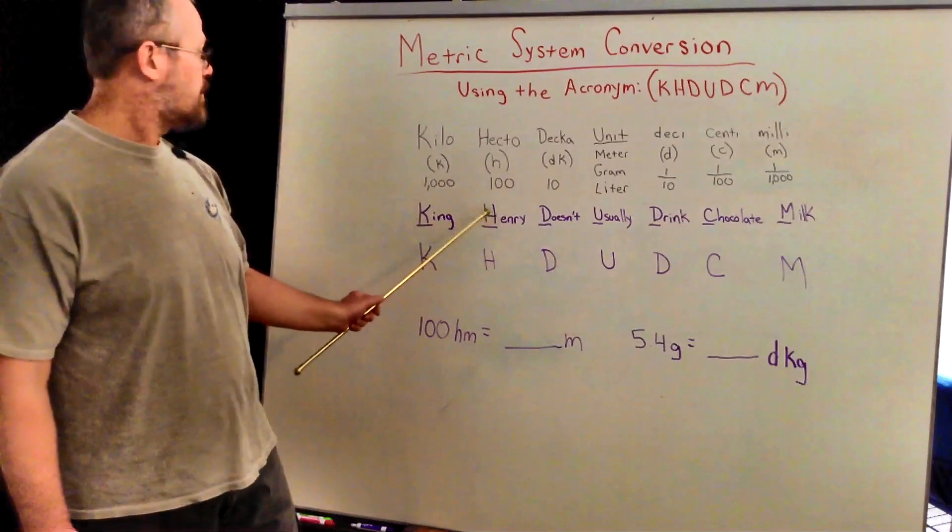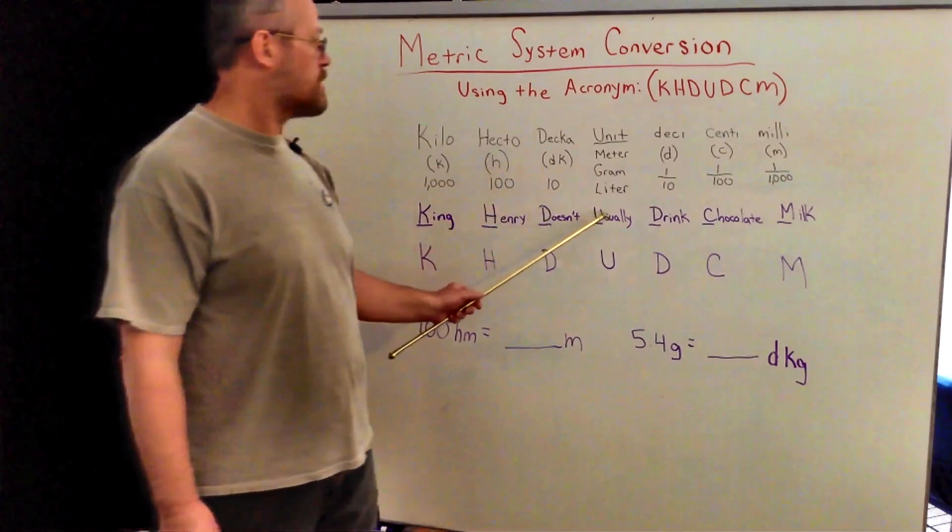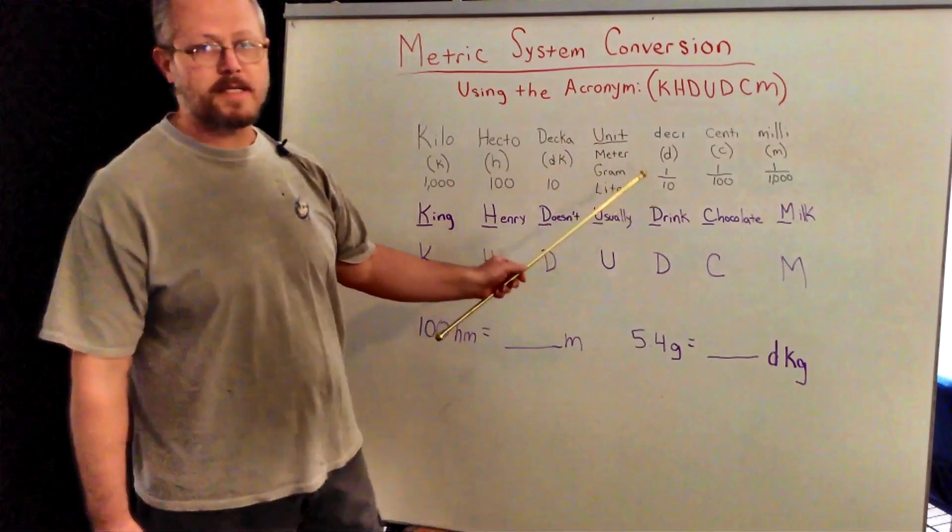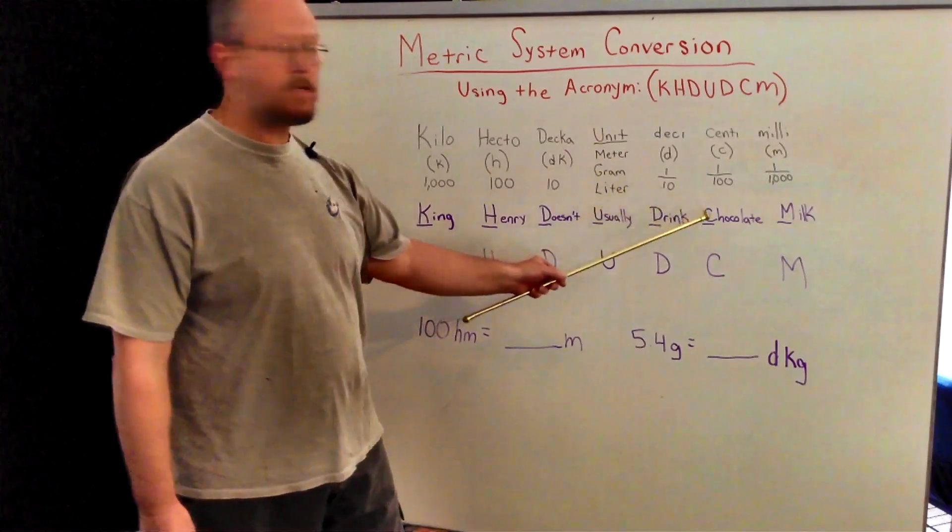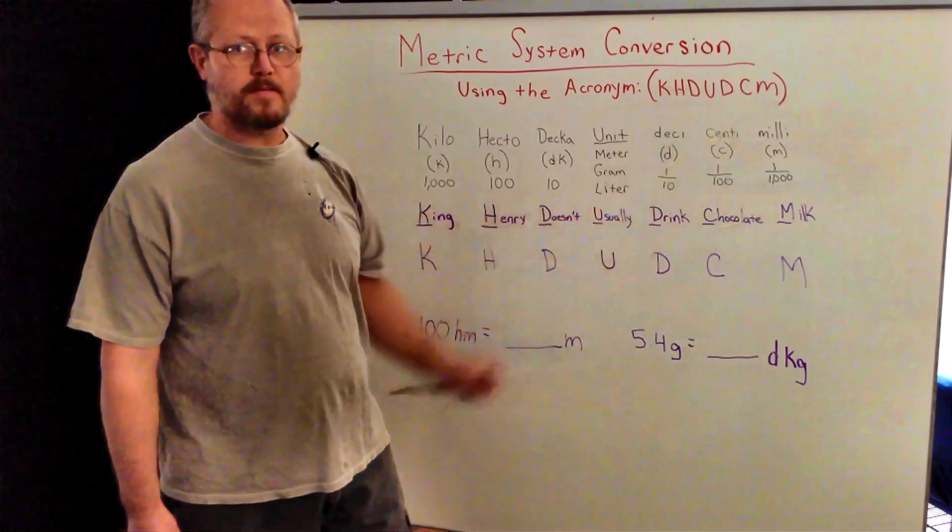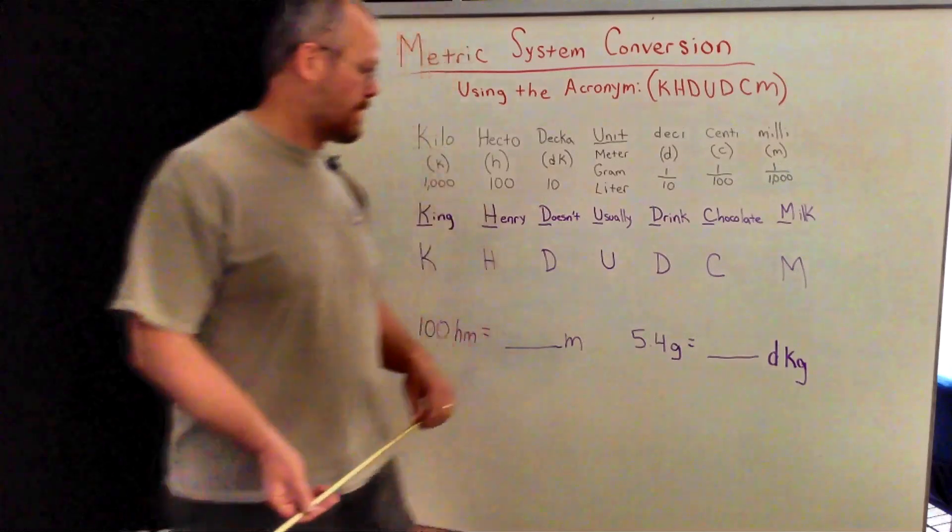To remember that it's king for kilo, Henry for hecto, doesn't for deca, usually for the unit measurement, drink for deci, chocolate for centi, and milk for milli. And we're going to do two problems on the board just to get you thinking that way.